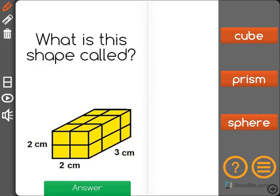What is this shape called? Is it a cube, a prism, or a sphere?